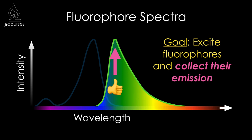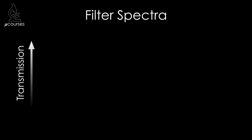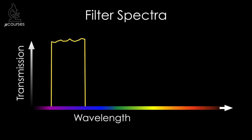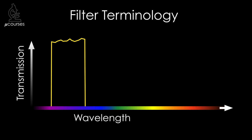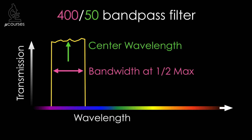We're going to select for excitation and emission wavelengths using filters. Filters are optical elements designed to block some wavelengths while transmitting others. The blocking and transmission properties of filters can be visualized on spectra. The center wavelength tells us where along the spectrum the filter transmits, and the bandwidth at half-maximal transmission tells us the range of wavelengths transmitted. These numbers are written as center wavelength slash bandwidth — for example, a 400/50 nanometer bandpass filter.